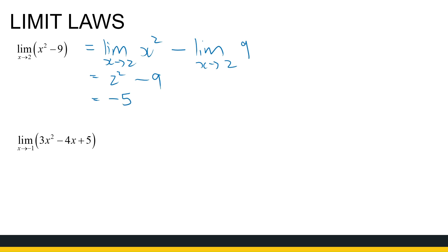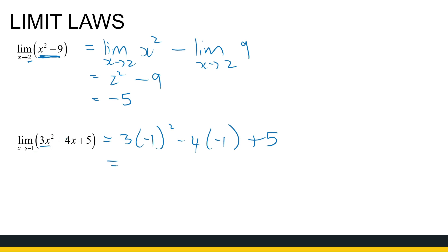We don't have to take it apart like that because this is a polynomial function — we can simply substitute 2 in. Same for the next example, which is also a polynomial, so I can substitute minus 1 in. That limit value is 3(−1)² − 4(−1) + 5, which gives 3 plus 4 plus 5, equaling 12.